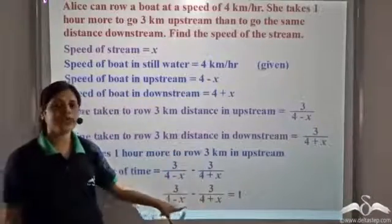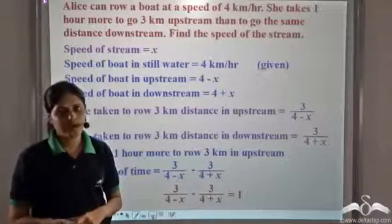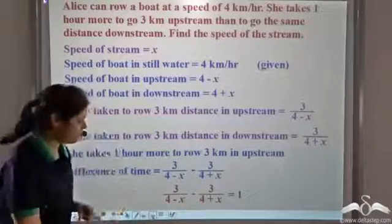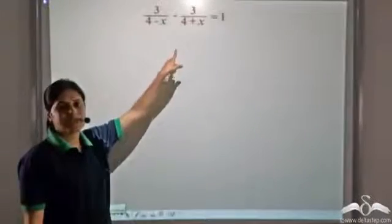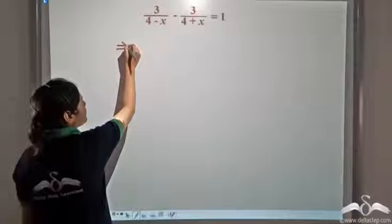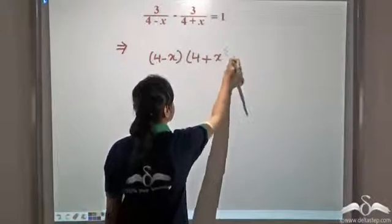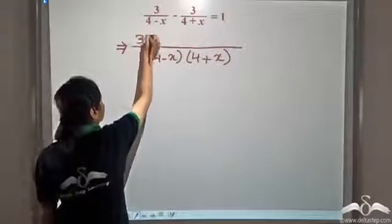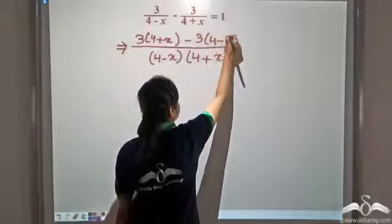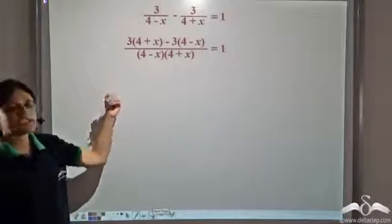Now in order to find the value of x, which is the unknown, we need to solve this equation. But this is neither a linear equation nor a quadratic equation. So let us simplify this and see if we can reduce it to a known form. We take the LCM of the denominators — (4 minus x) into (4 plus x) — and the numerator becomes 3 into (4 plus x) minus 3 into (4 minus x), all equal to 1.